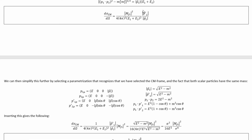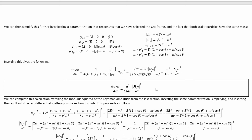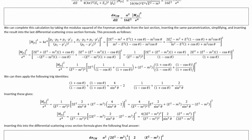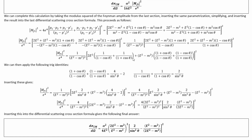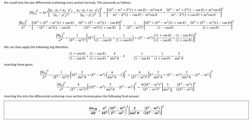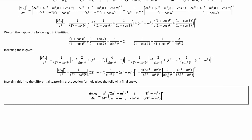If we plug this parameterization into the formula, it simplifies down to this ridiculously simple thing. We can complete the calculation by taking the modulus squared of the Feynman amplitude, inserting the same parameterization, simplifying, and inserting that result into the differential scattering cross-section formula. First, this is the Feynman amplitude squared, and then we insert the parameterization to get this. Ultimately, I rewrote it using two trigonometric identities, which help simplify it down further, and we get to this maximally simplified result.